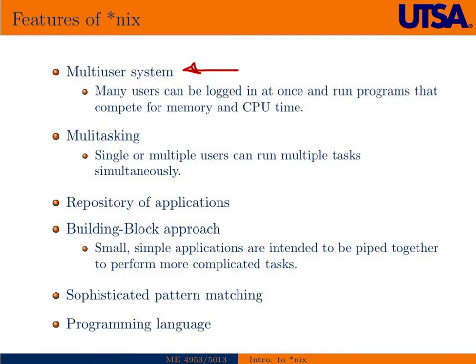Unix is also a multi-tasking operating system. As an individual user or as one of multiple users, you can run multiple tasks and programs simultaneously, and the kernel handles all of that. While Unix formally refers to the kernel, the kernel by itself can't really do anything of interest to the user. So Unix also provides a repository of applications — some highlighted on the previous slide — and they can be combined through things called pipes. This building block approach means applications are small and simple, and are intended to be piped or strung together to perform more complicated tasks.